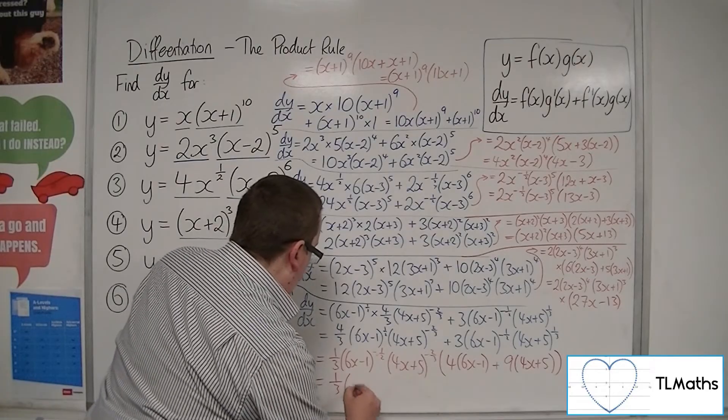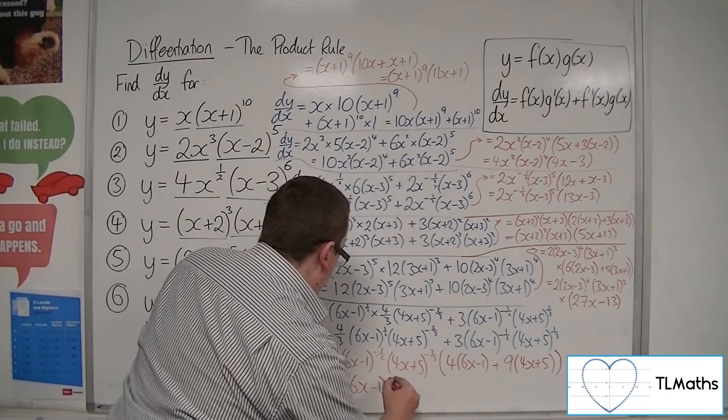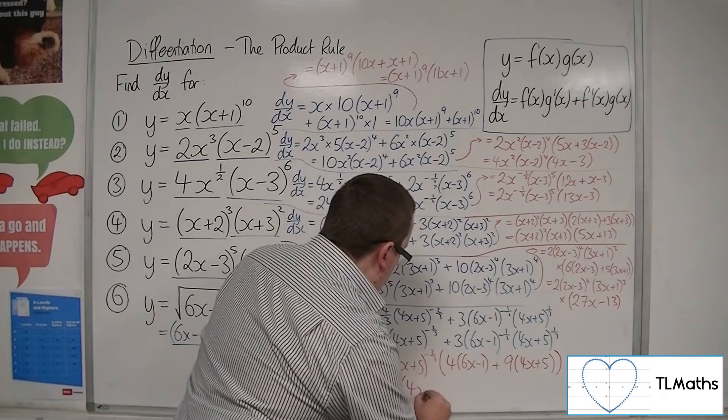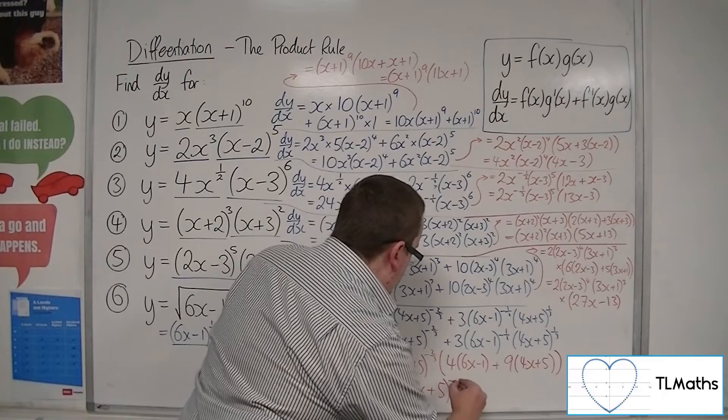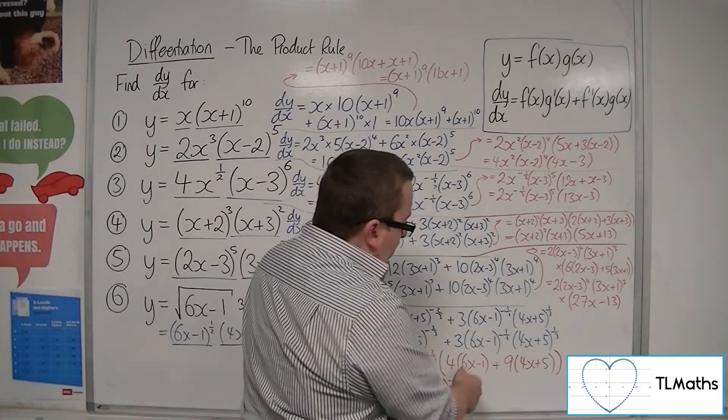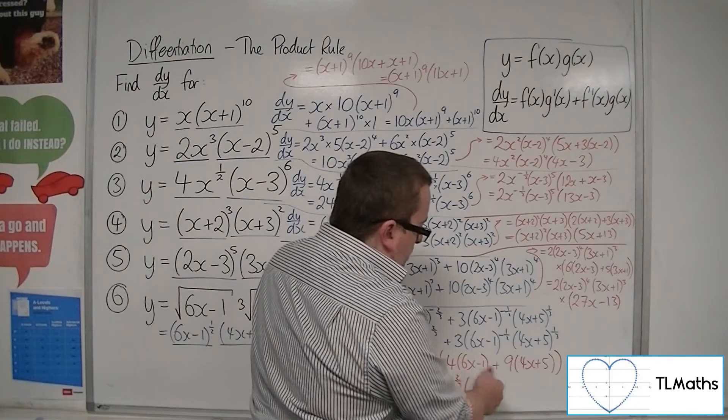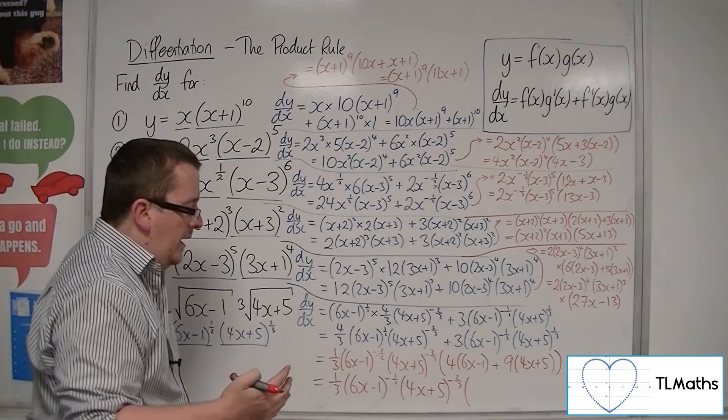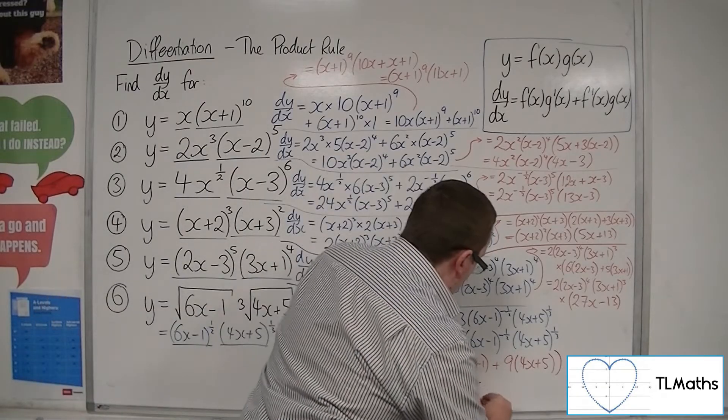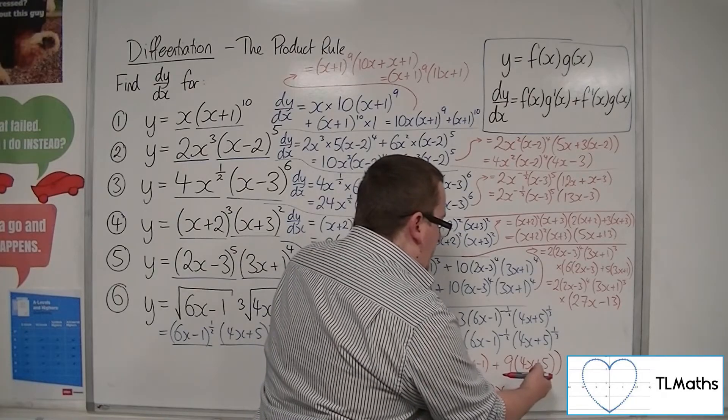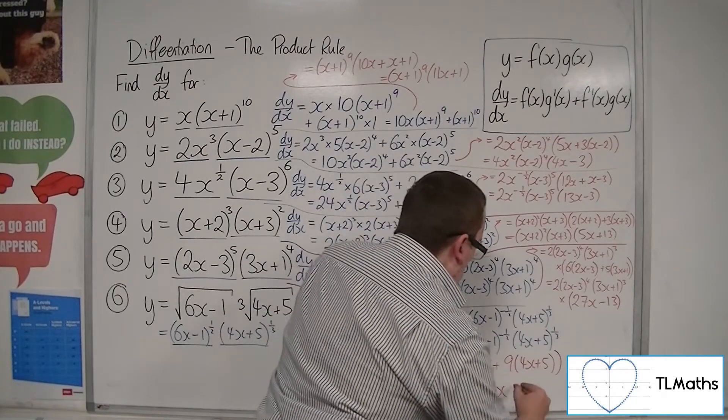So what have I got left? So I've got the third, the (6x-1)^(-1/2), the (4x+5)^(-2/3), and last but not least, I've got 4 lots of 6, so that's 24. So I've got -4 plus 36, which is 60x, and I've got -4 plus 45, so that's 41.